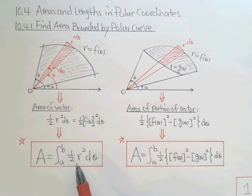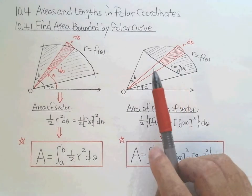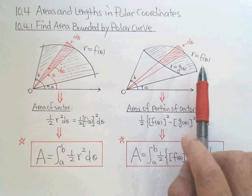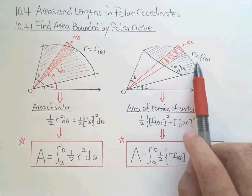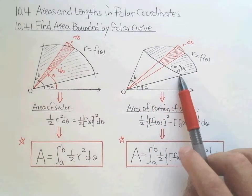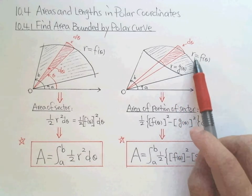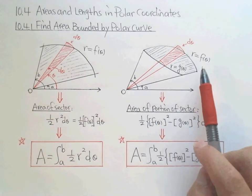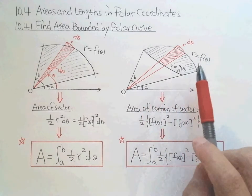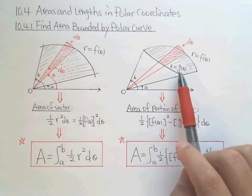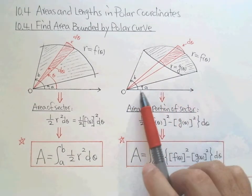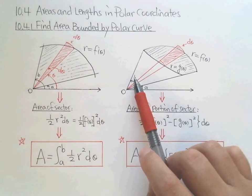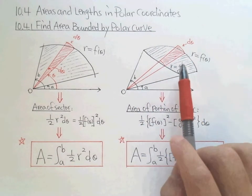That gives us the first formula. Now for the second formula — the area formed not by one polar curve but by two polar curves. The top one is r equals f(θ) and the bottom one is r equals g(θ). Both curves are functions of θ. We look at the interval for θ from A to B, where A is the smallest theta and B is the biggest. So this time we have an enclosed area — top, bottom, left, right.